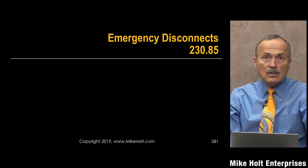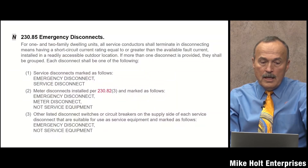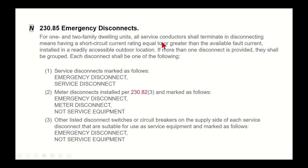Now we're into the emergency disconnect in 230.85. For one or two family dwellings, all service conductors shall terminate in a disconnecting means having a short-circuit current rating equal to or greater than the available fault current — that's 110.10 — installed in a readily accessible location.